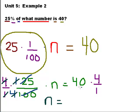And on this side, I take the 40, I put it over 1, and I multiply. 40 times 4 is 160, and it's over 1, which is just 160. So our final solution is n equals 160.